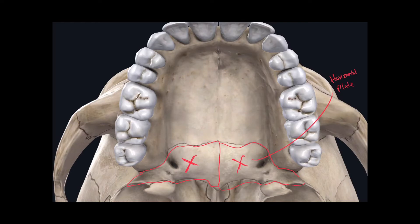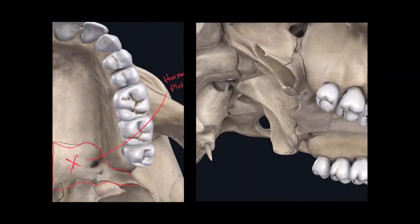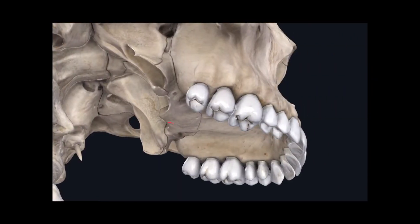The horizontal plates of the palatine bone articulate with the maxilla, and we'll get to that when we cover the maxilla. Looking at a different image of the palatine bone, we can see both palatine bones — here's the horizontal plate, and right here is the perpendicular plate of the palatine bones.